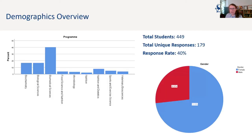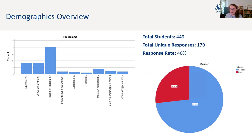In terms of demographics, we had 179 unique responses across all three time points, with a total of 449 responses overall — we estimate that to be about a 40% response rate. We had a good representation from each programme, with the programme percentages broadly representative of what we have at Surrey: biomedical sciences being our largest cohort, biological and biochemistry about the same, and lower numbers from nutrition. In terms of gender, it wasn't entirely representative but was very close.